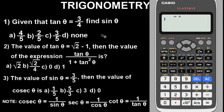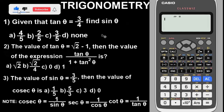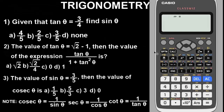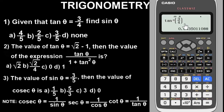Question 1 says: given that tan theta equals 3 over 14, find sin theta. To solve this, what we are going to do first is find the inverse of this value of tan theta and store it as X in the calculator. Press Shift then Tan — that is tan inverse — then enter the value: 3 over 14. Close the bracket. Then to store it, press the store button and the alphabet X. It now indicates the answer is stored as X.